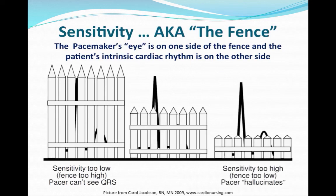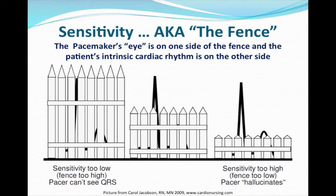The sensitivity allows the pacemaker to see what's going on inside the heart. Think of it as a fence — the pacemaker eyeball is on one side and the cardiac rhythm is on the other. We want the fence high enough so the pacemaker can see the QRS. If the fence is too high, the pacemaker can't see the rhythm and will send impulses when the patient doesn't need it. If the fence is too low, the pacemaker may see P waves, QRS's, T waves, or artifact and think it doesn't need to pace when it actually does.